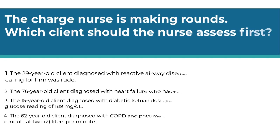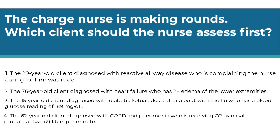Here is our final question. The charge nurse is making rounds. Which client should the nurse assess first? Number one, a 29-year-old with reactive airway disease complaining the nurse caring for him was rude. Number two, the 76-year-old with heart failure who has 2-plus edema of the lower extremities. Number three, the 15-year-old with diabetic ketoacidosis after a bout with the flu who has a blood glucose of 189 mg/dL. Number four, the 62-year-old with COPD and pneumonia receiving O2 by nasal cannula at 2 liters per minute.